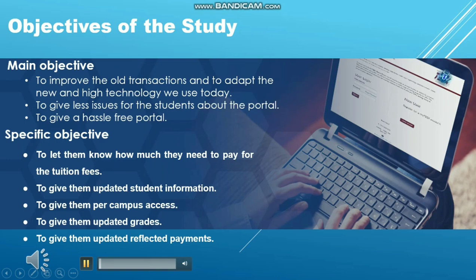Objectives of the Study. There are two types of objectives. First, the main objectives: to improve the old transaction, to adapt to the new high technology we use today, to give less issues for the student about the portal, and to give a hassle-free portal. Second, the specific objectives: to let students know how much they need to pay, to give them updated student information, to give them per-campus access, to give them updated grades, and to give them an updated portal.